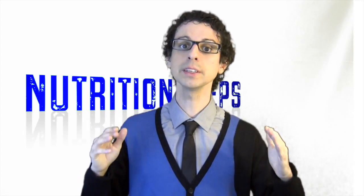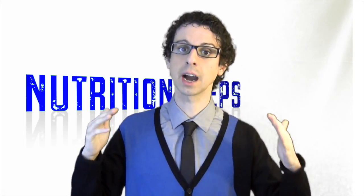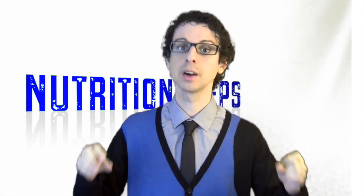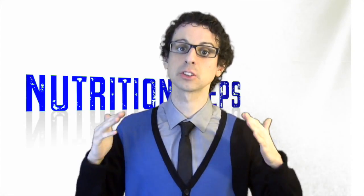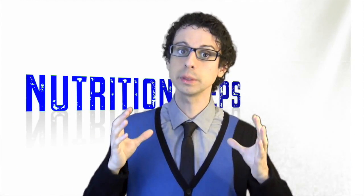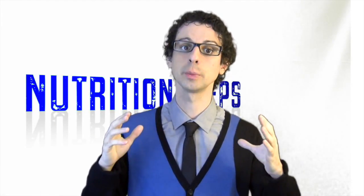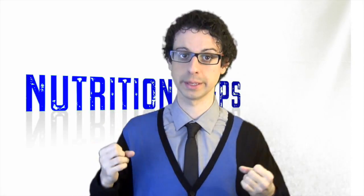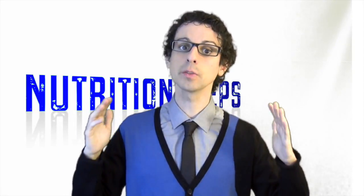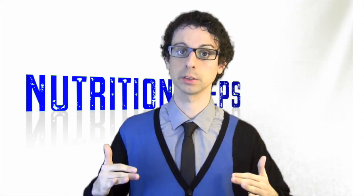The glycemic index only tells us how fast the carbs in a food raise glycemia, not how much. For that, we must also know how much carb is inside a serving of that food. Combining these two pieces of information, we can determine the glycemic load of our meals. The general rule is that the glycemic load of all of our meals should be as slow as possible.